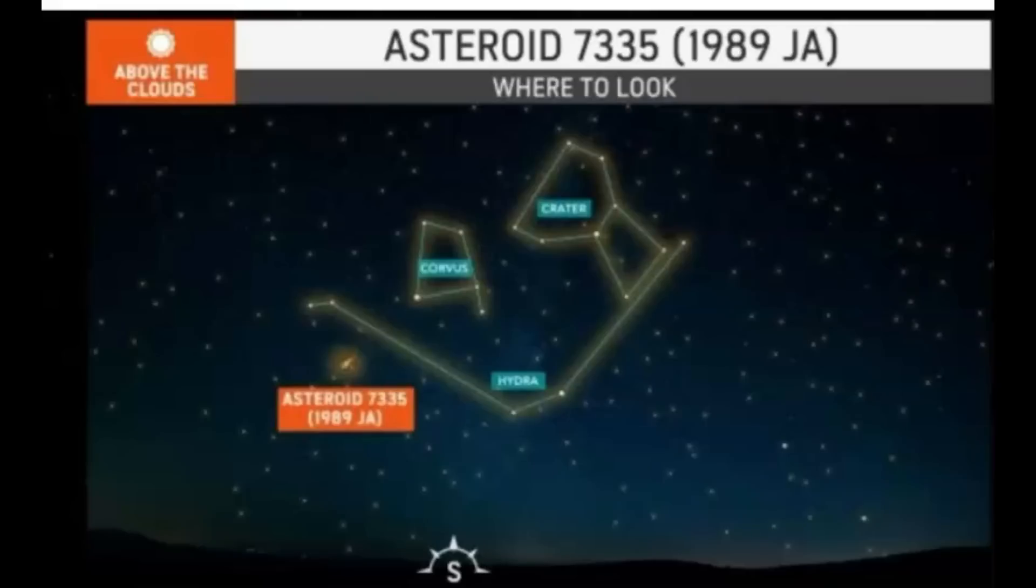AccuWeather has a map of the southern sky where you can look and watch for this asteroid right there, with different constellations that they drew out for us. Earth has been hit by large asteroids in the past, but none as big as what this one is reportedly said to be, 1.1 miles across.